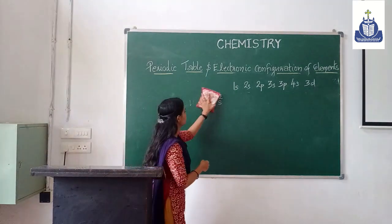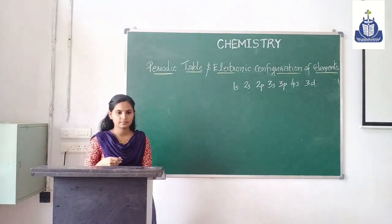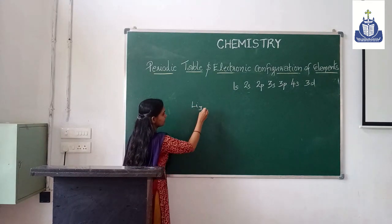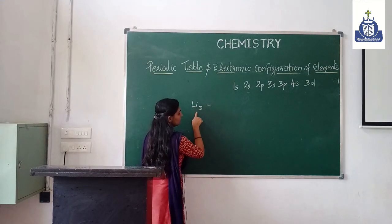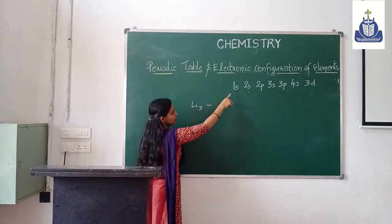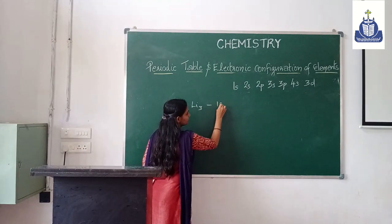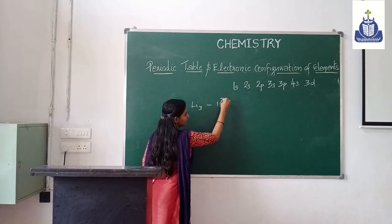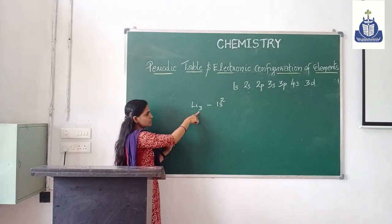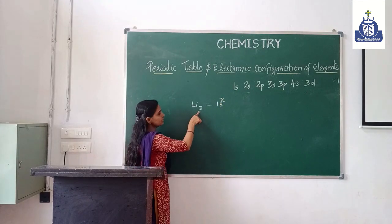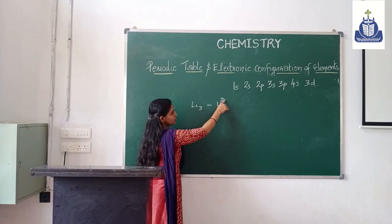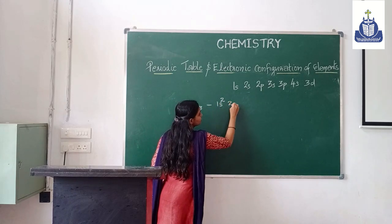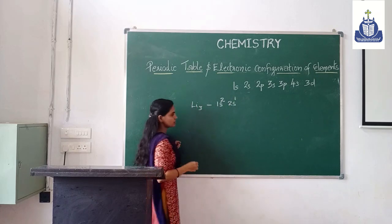Another example: lithium. Lithium's atomic number is 3, so it has 3 electrons. First, 1s subshell is filled with 2 electrons (its maximum). Then 3 minus 2 equals 1 remaining electron, which goes into the 2s subshell. So lithium's electronic configuration is 1s² 2s¹.